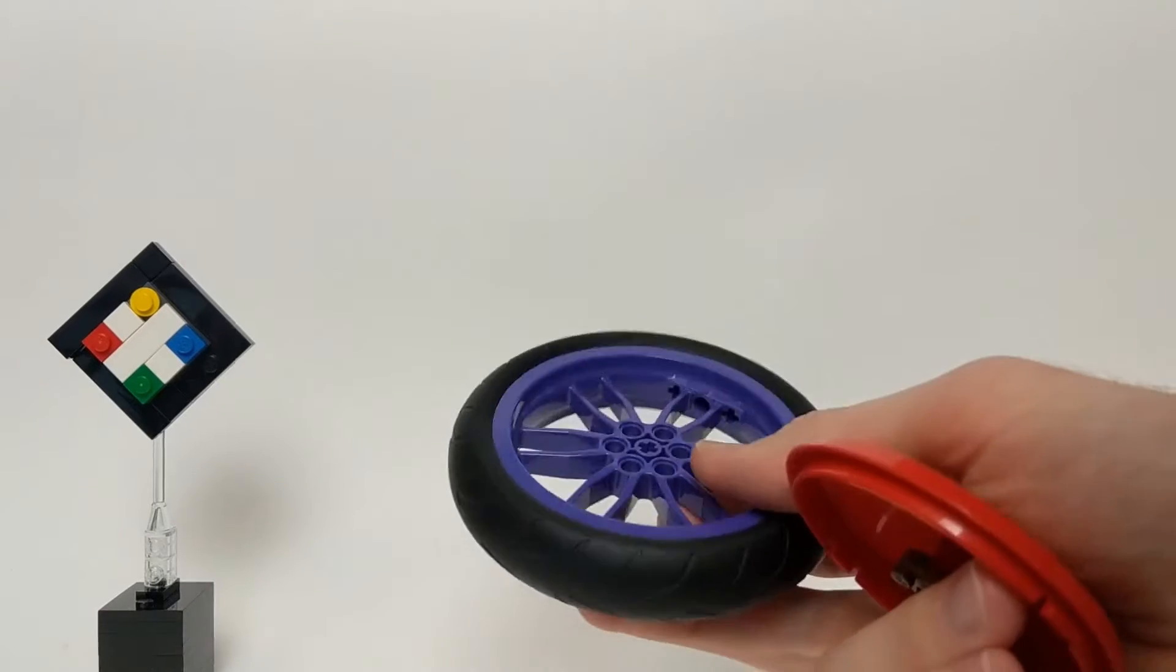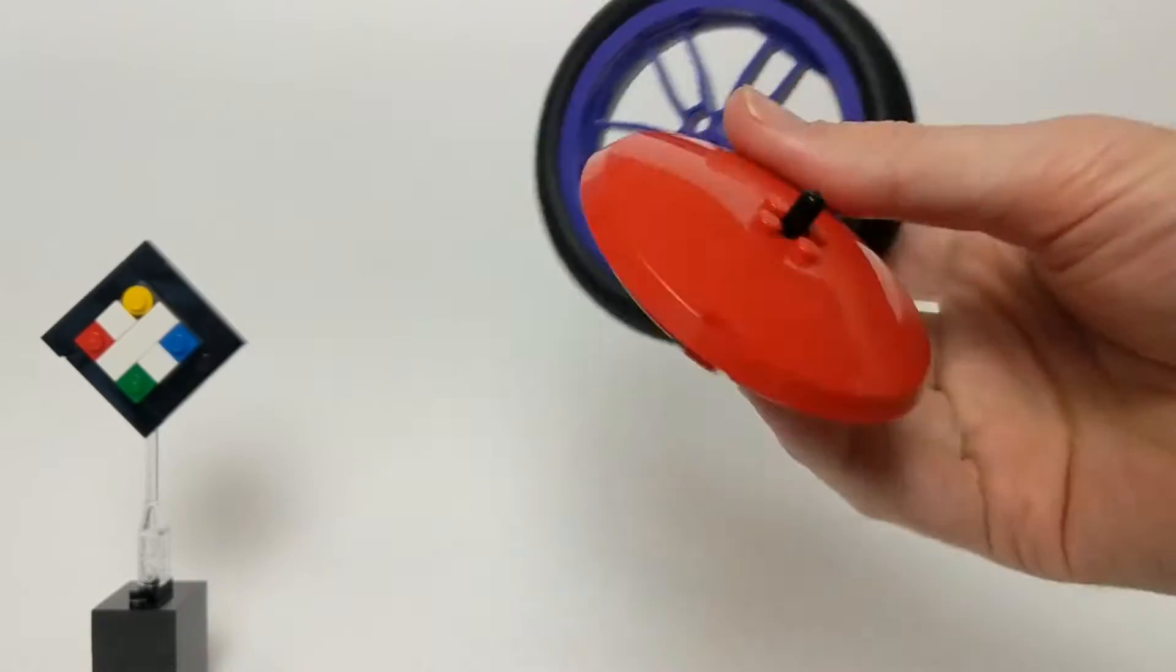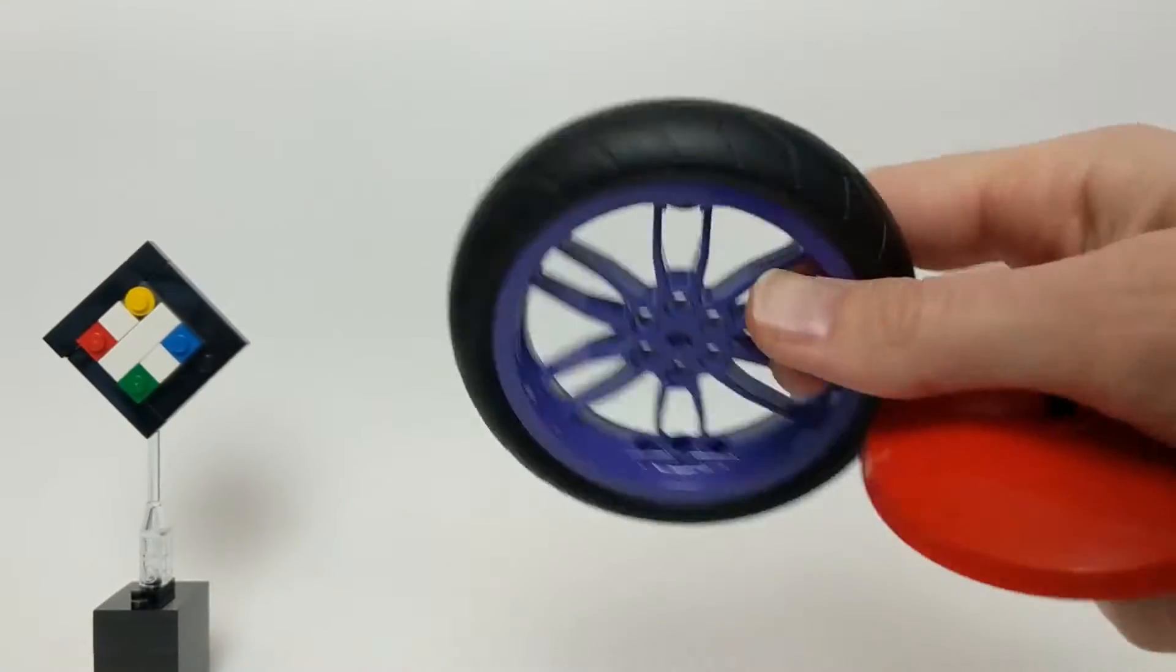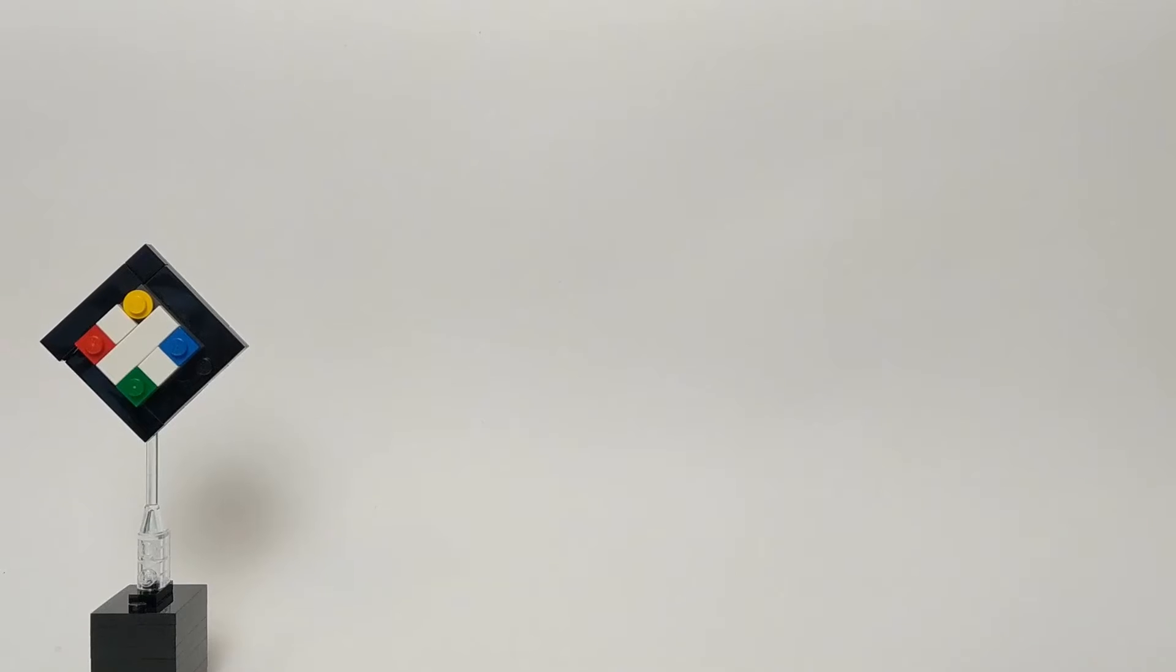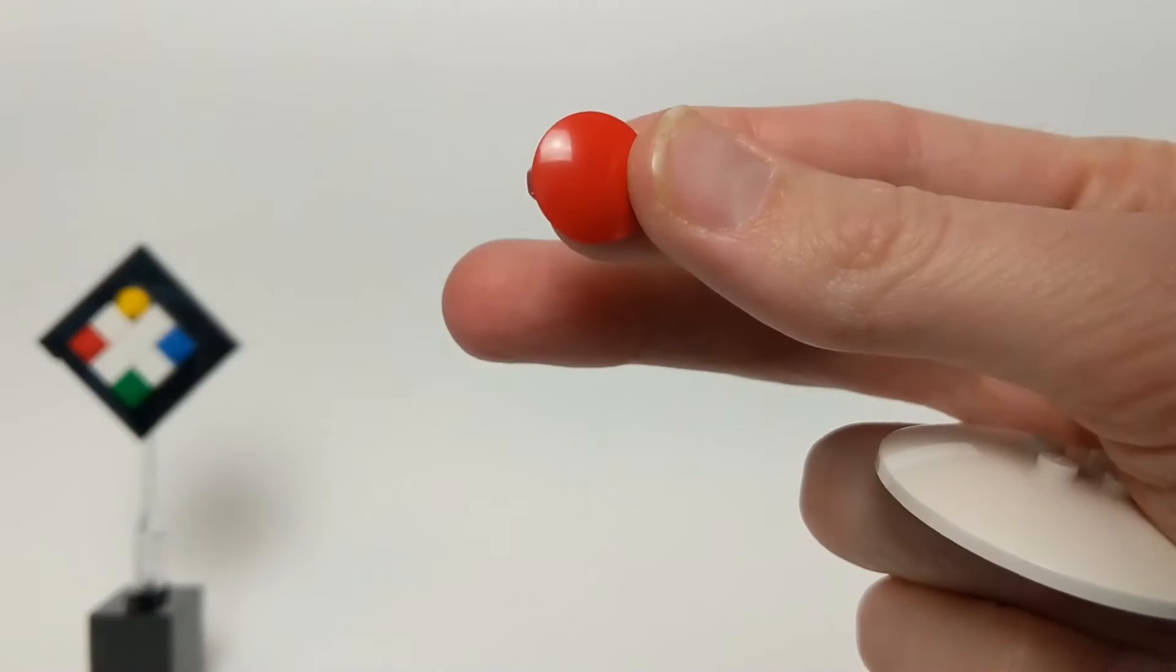When you think about LEGO, a lot of it is bricks and angular pieces, but we have lots of rounded elements in our assortment. We've got wheels and dishes of varying sizes, including small rounded elements.